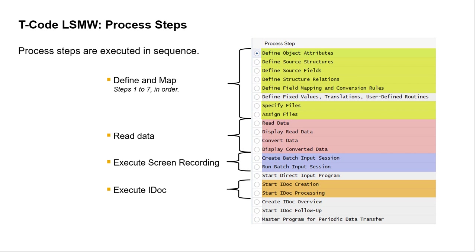Your approach to crafting an LSMW project is a progression from the target object to the source data files — you begin with the end in mind. This conceptual sequence of operations is realized in the organization of the LSMW program. You work through the process steps in order to define the structures and the field mapping. You can't skip any of the highlighted define and map steps. When the project is completely defined, it's possible to repeatedly perform the read steps, followed by the execute steps for your target object type.